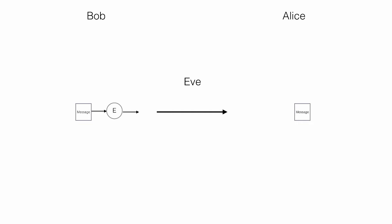In this case Bob can encrypt the recipe before sending it to Alice. It will be sent encrypted, and if Eve steals the envelope the content will be unreadable for her. Alice decrypts the package before reading it.